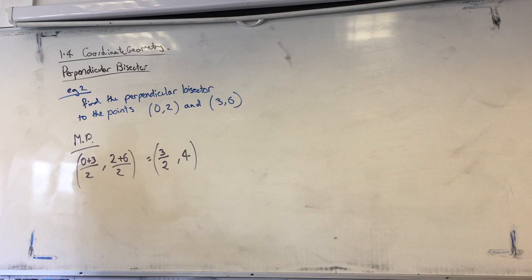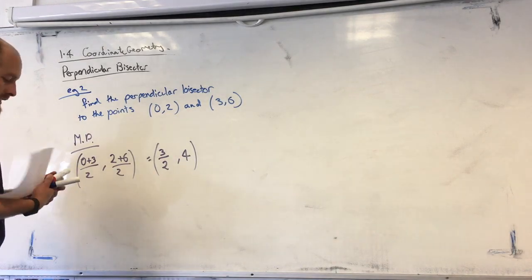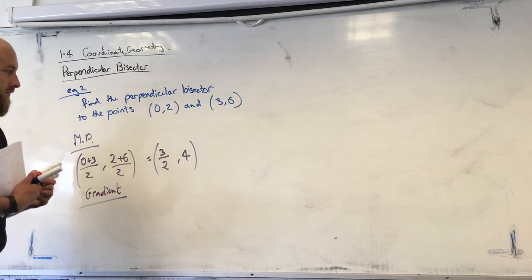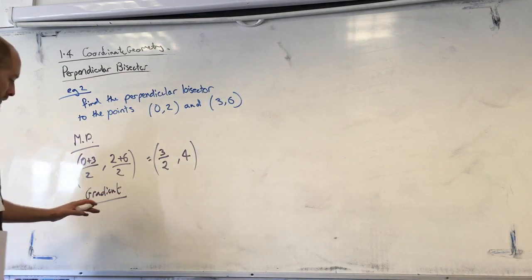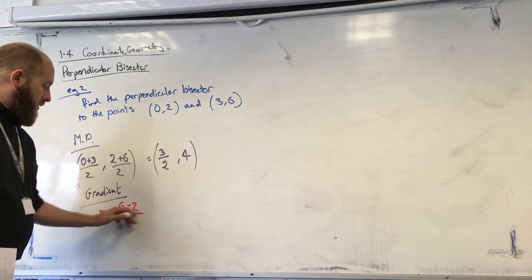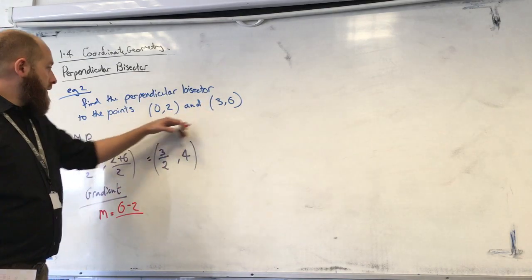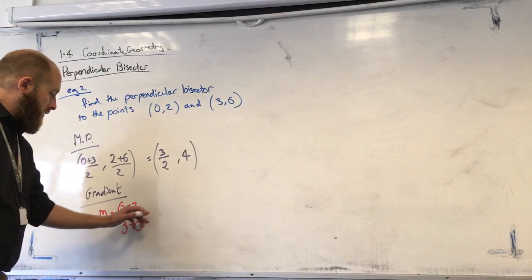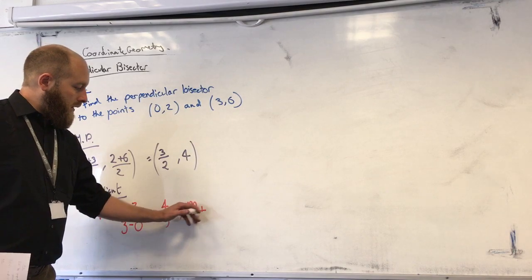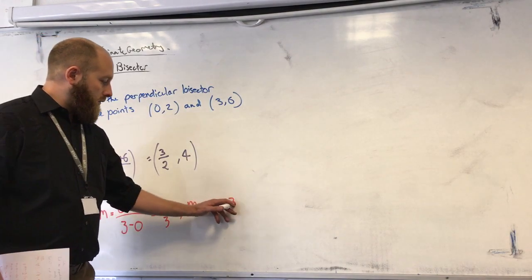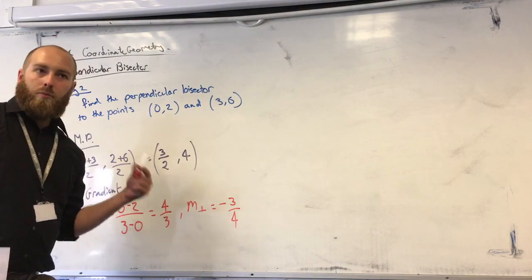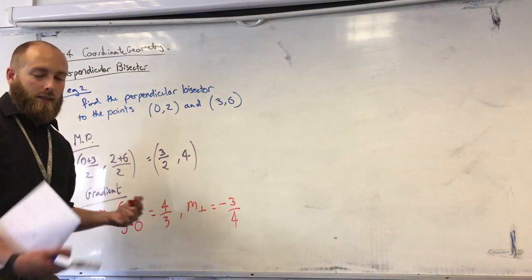Now we need our gradient. So y2 take y1, 6 take 2, over x2 take x1, 3 take 0, which gives us 4 over 3. So the perpendicular gradient is going to be minus 3 over 4. So using our point and using our gradient, we can now put it together and find the perpendicular bisector.